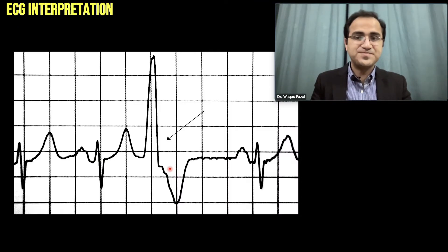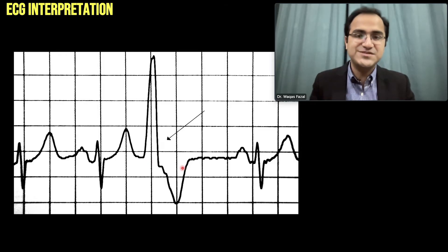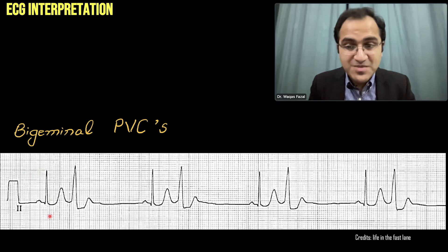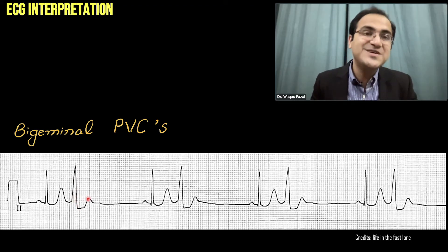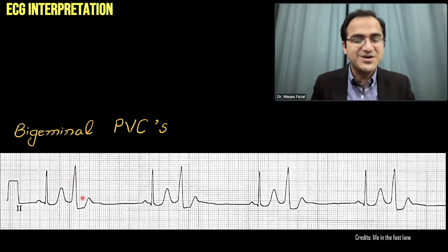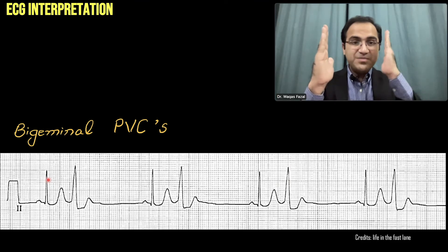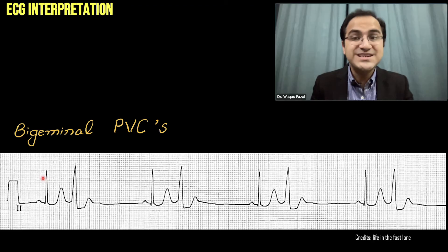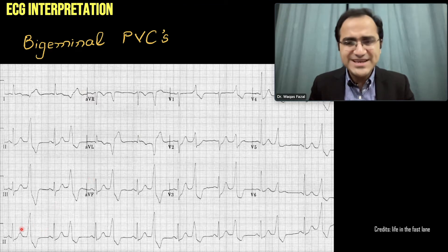A PVC appears on ECG as a wide bizarre wave with an inverted T wave. In an ECG example: a normal sinus beat with a P wave and narrow QRS complex is followed by a wide bizarre QRS complex with an inverted T wave — that is a premature ventricular contraction. A pattern of normal beat followed by a PVC, alternating, is called a bigeminal PVC.